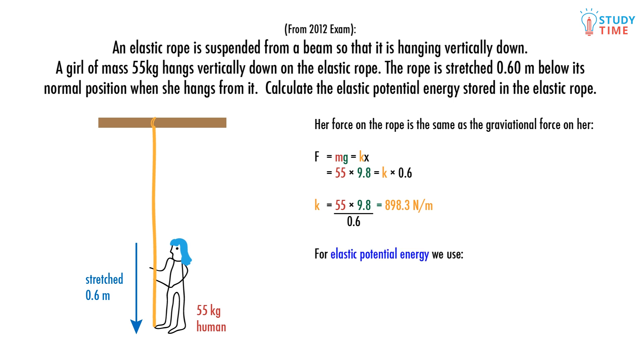For potential energy we use e equals half kx squared. So we substitute in k and x to get e equals half 898.3 times 0.6 squared to find e equals 160 joules. This is the amount of elastic potential energy stored in the rope.